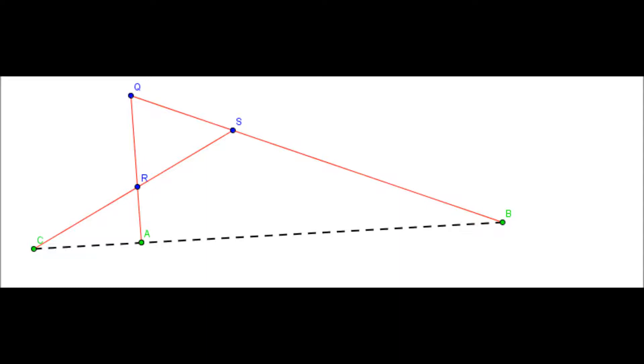So one of the key results which we established last time was that given any three points on a line, we can find a fourth point which ends up making a harmonic set. So in this example here, we have points A, B and C.